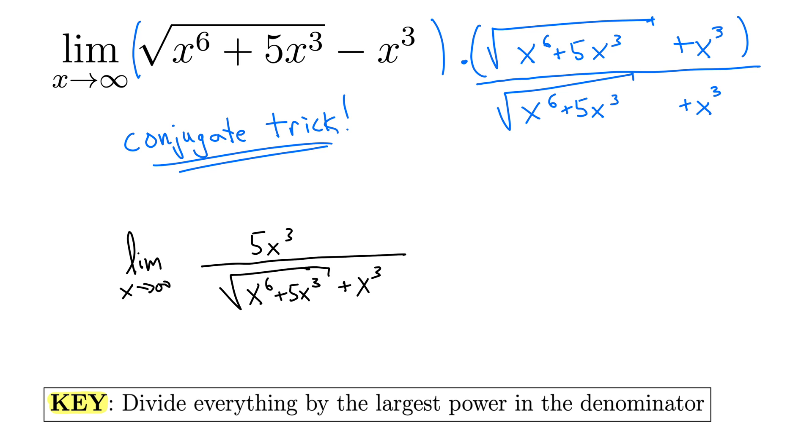Okay, so the highest power in the denominator is x cubed in this case. So here we'll write it as x cubed. Well, what about this x to the 6th? Well, note that it's actually square root of x to the 6th.